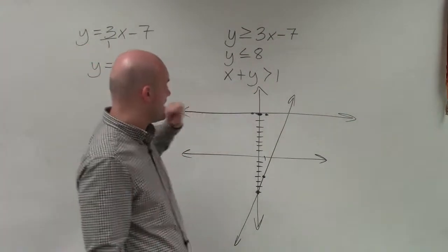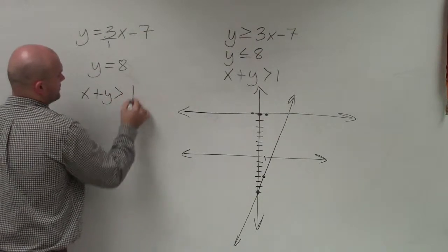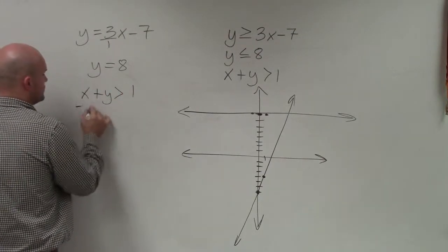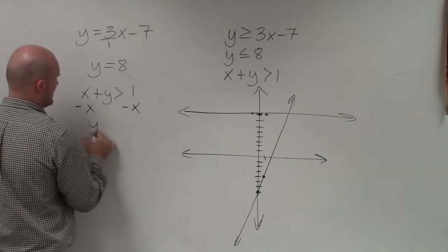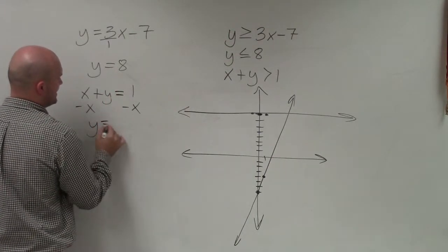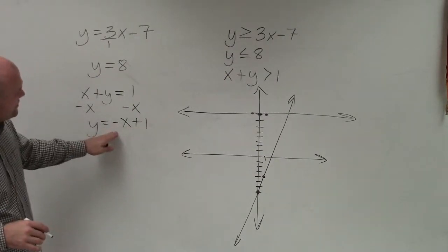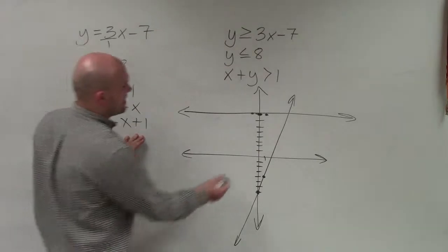And then the last equation that we have here is x plus y is greater than 1. Now to write this in slope-intercept form, we'll subtract an x on both sides. And I get y equals negative x plus 1. So therefore, in this case, we understand that the y-intercept is at positive 1.